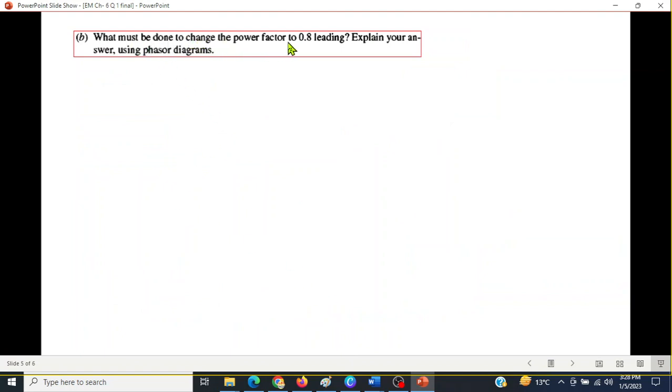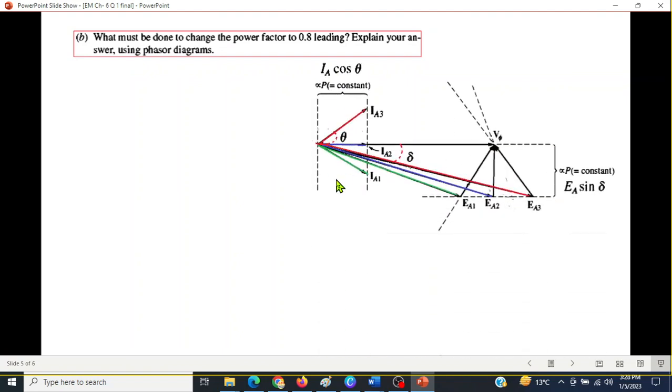Now part b: What must be done to change the power factor to 0.8 leading? Explain your answer using the phasor diagram. Let's look at the phasor diagram. This looks slightly complicated but I have colored it so you can have a fairly good idea. Here we are at power factor one, that means the terminal voltage VT and the current are in phase.